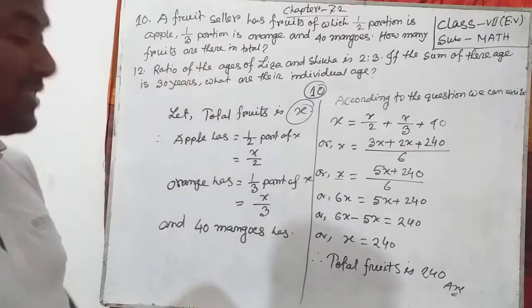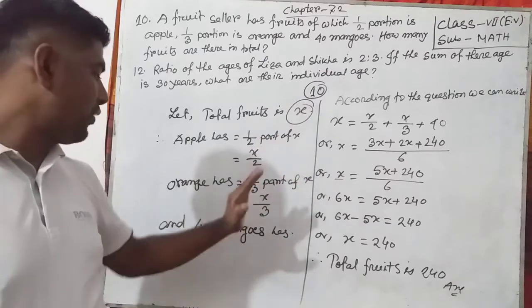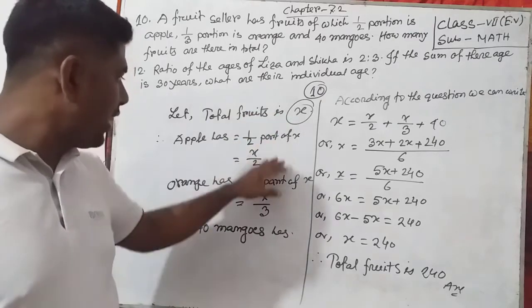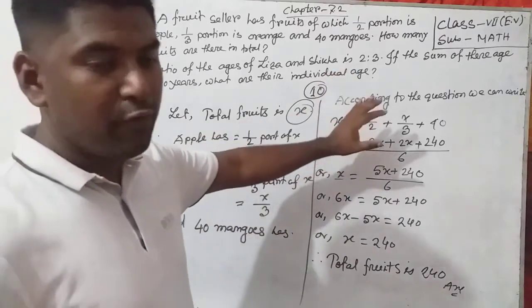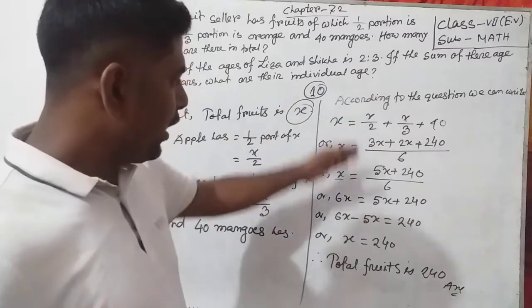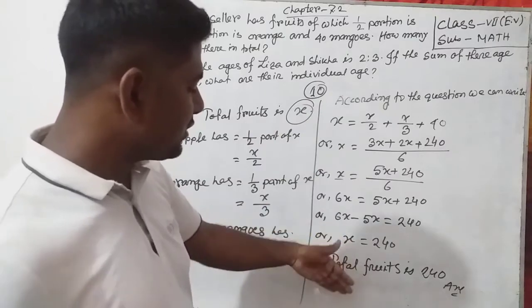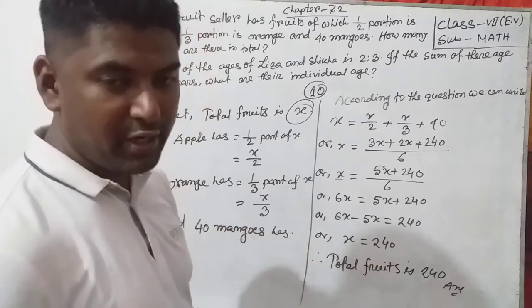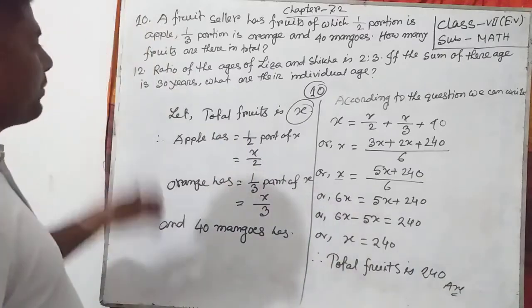So how many fruits are there in total? Total fruits is 240. This is the answer. I hope everybody understands. The number of total fruits is 240. Now I will discuss number 12.